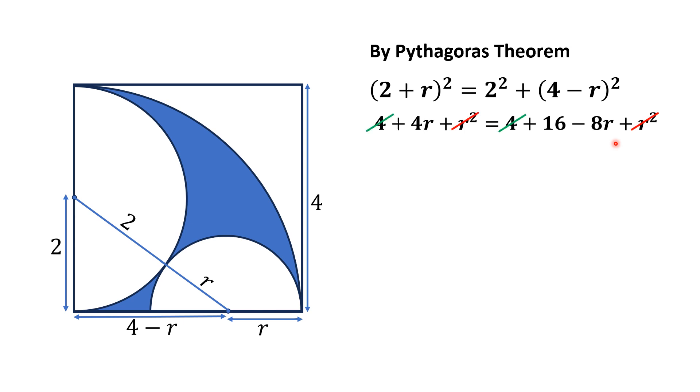So from here, taking 8r to the left, we will get 12r equals 16, that implies that r is equal to 4/3. Now we find the area of the blue shaded region.